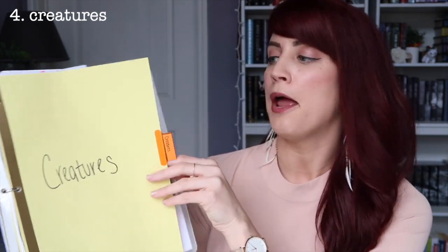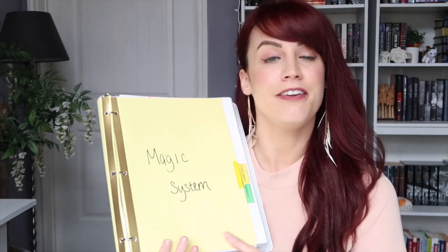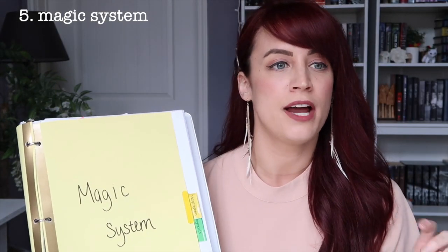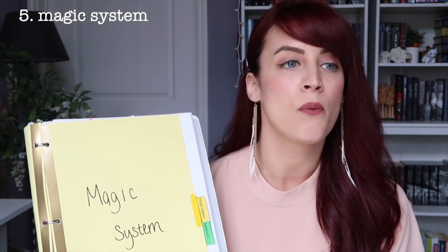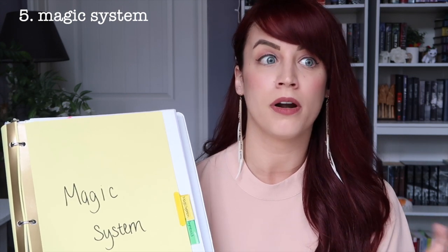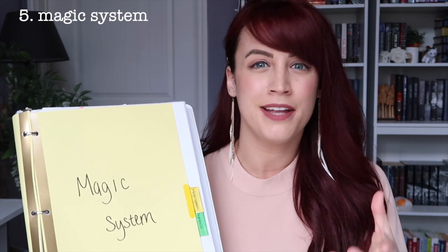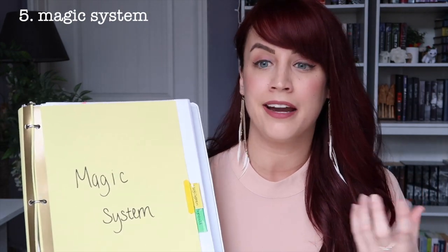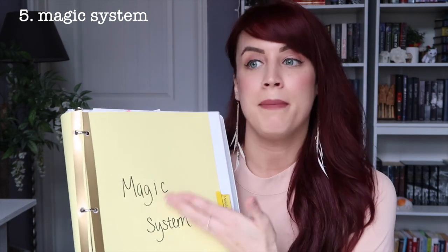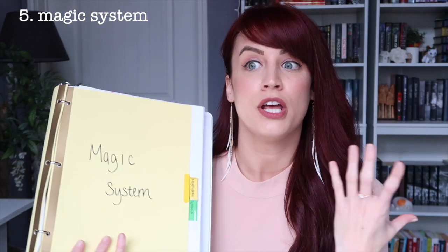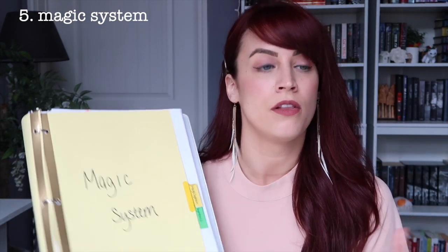The fifth section is the magic system. This is where I write down what types of abilities exist, what the magic system looks like, and if something can overpower someone else's abilities. If you're not writing fantasy, this could instead cover technology systems, or the rules and laws that govern your story's society.